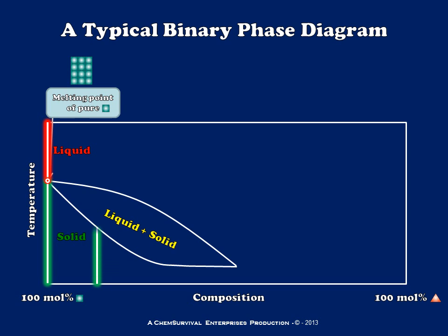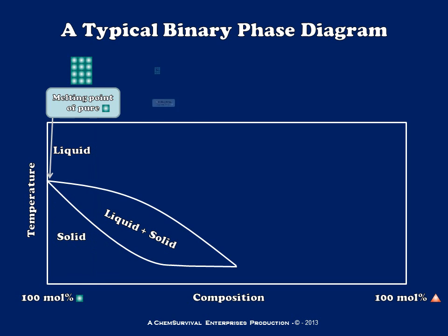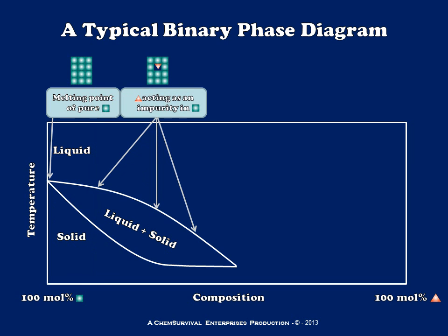If I were to heat the solid at some intermediate composition, I would expect it first to go through a range of melting temperatures — we'll talk more about that in another video. What's important right now is that the entire transition takes place at a temperature lower than the melting point of the pure solid. Over this region the red compound is acting as an impurity in the green. At some point we reach the eutectic point, which is the lowest possible melting point for a mixture of these two substances and the only temperature at which a mixture of the two melts at one specific temperature.